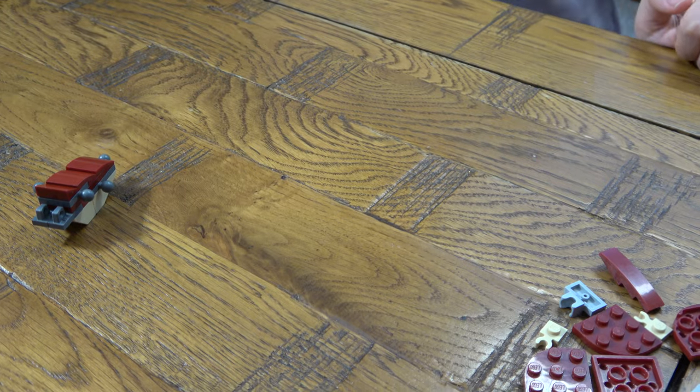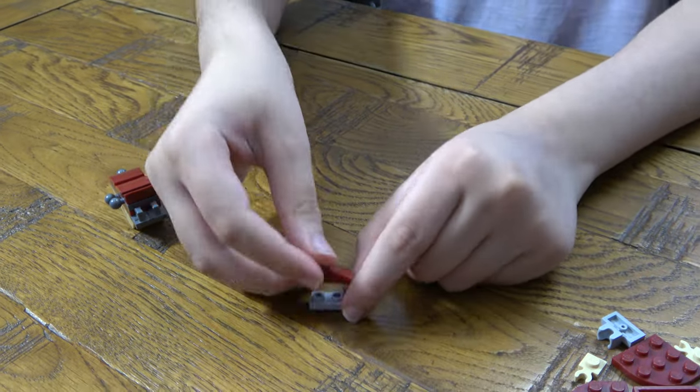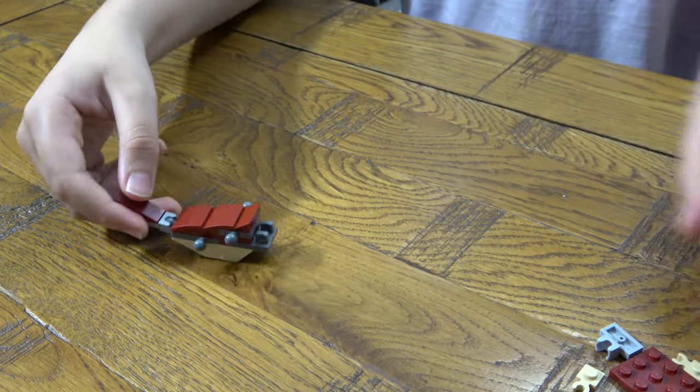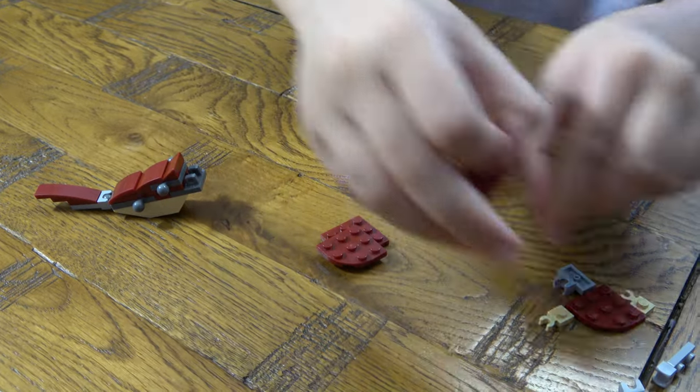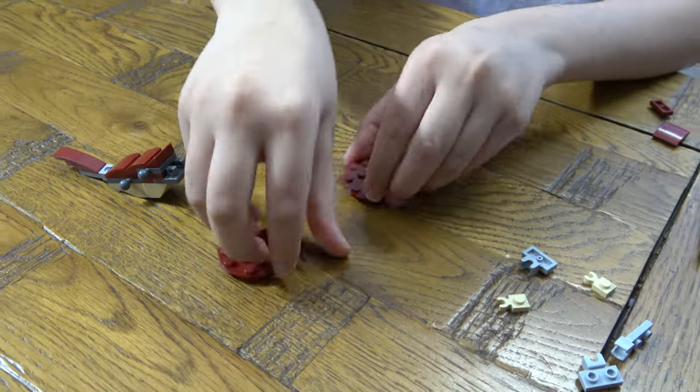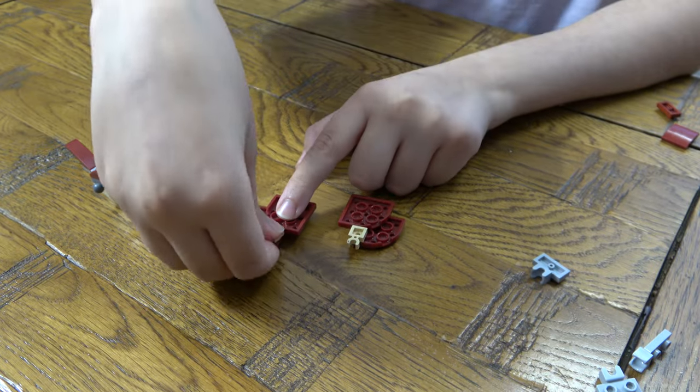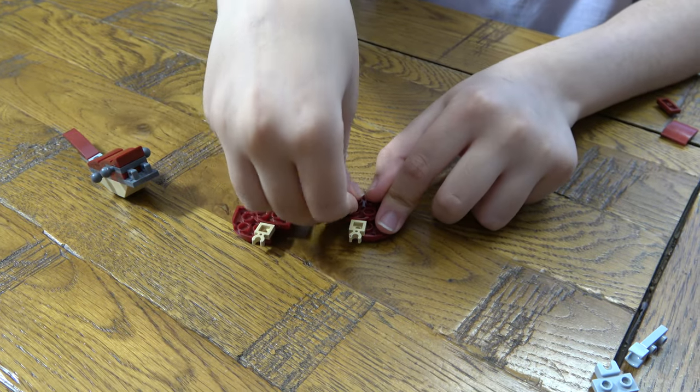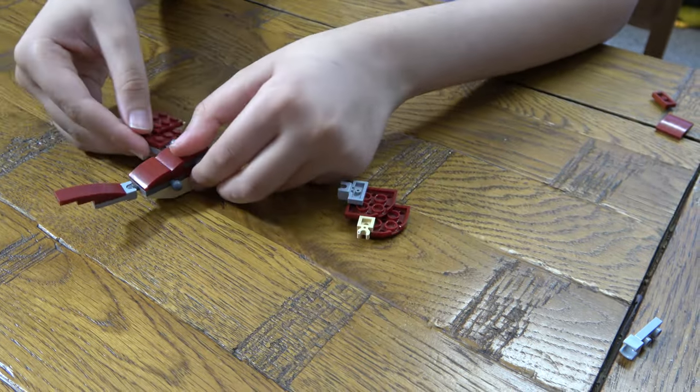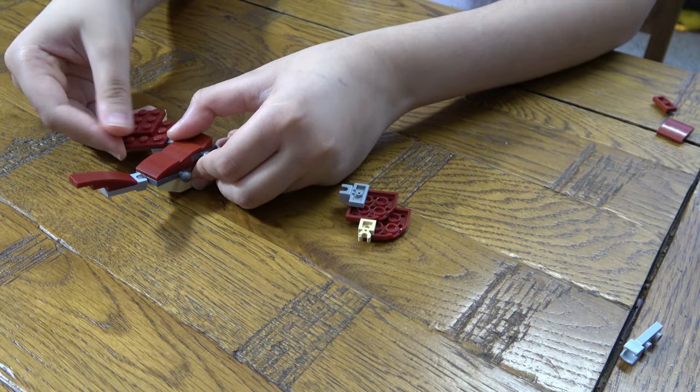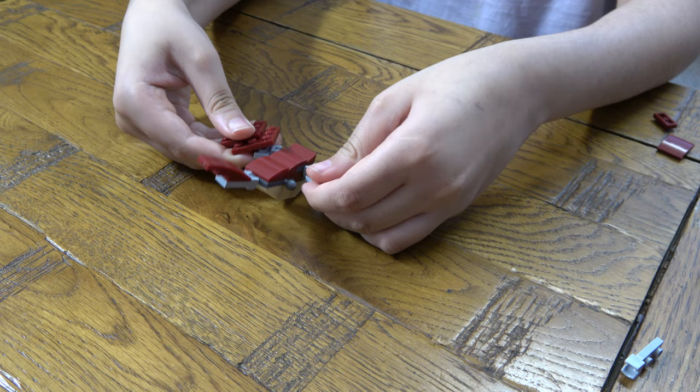Then next we place that there, we get that, place that on there for the tail. And we get this, we place it there, place that there, put it down like that there. Then we place them like so. Those are the wings.